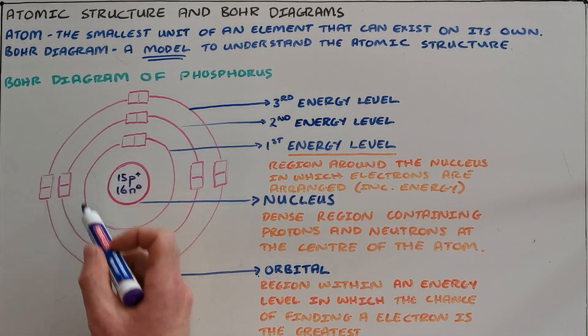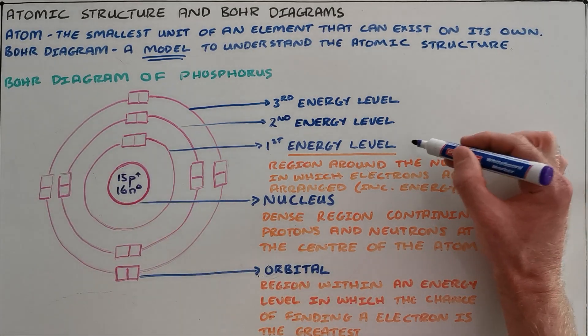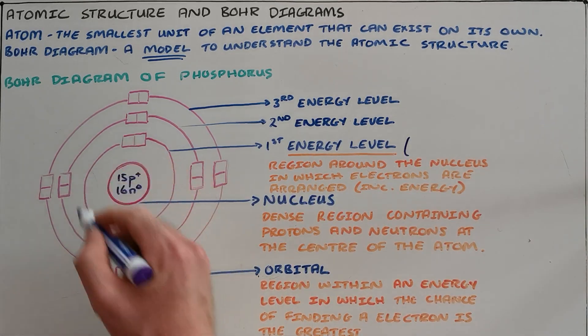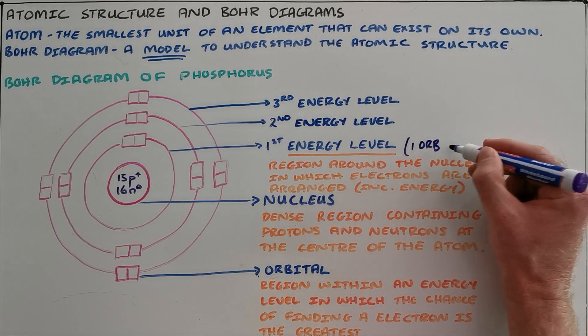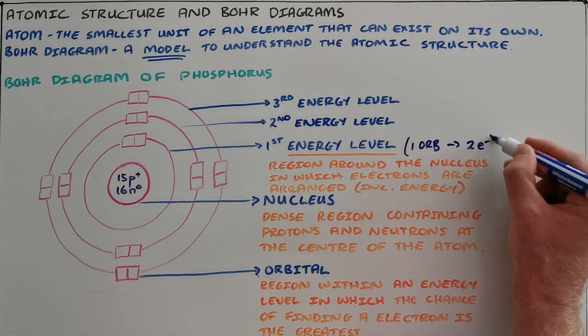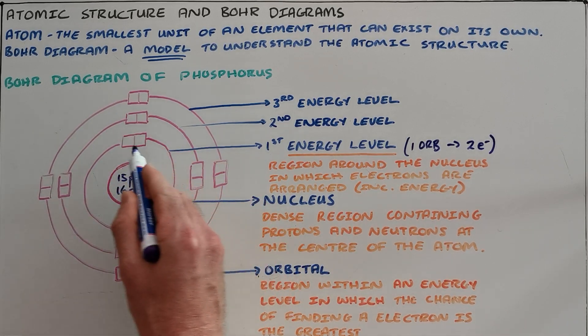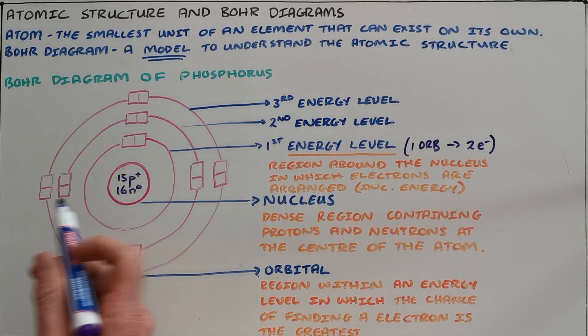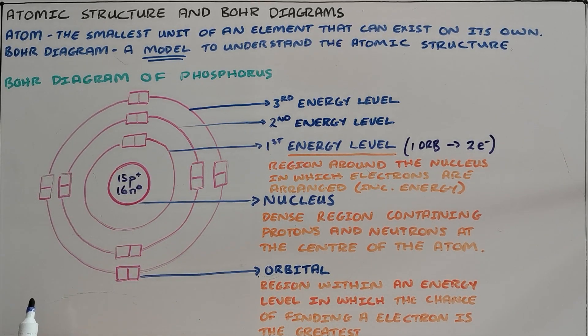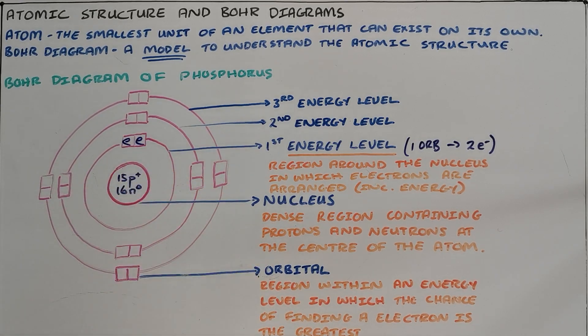What we can see from this Bohr diagram is that the first energy level contains only two electrons or one orbital. We say that it has one orbital where each orbital contains two electrons. Here we can see our first energy level is a circle that is drawn with one box that has space for two electrons. A phosphorus atom has 15 electrons. So the first two electrons will always go into the first orbital in the first energy level.